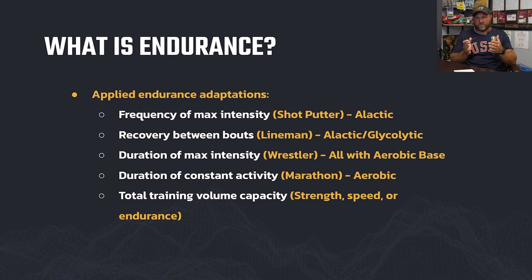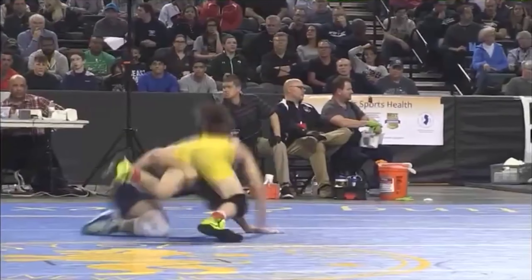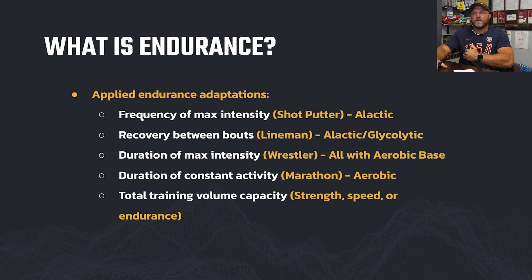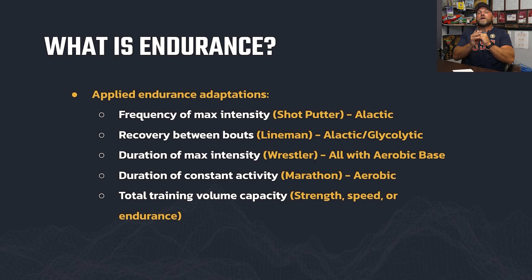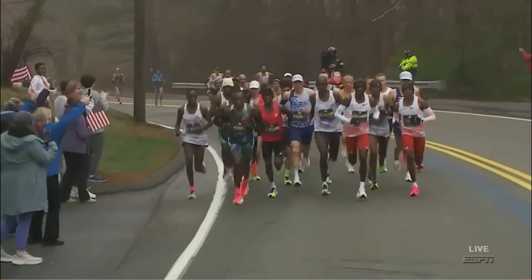We have frequency of max intensity work, recovery between bouts, and then duration of max intensity. Think about a wrestler taking a shot and going through a scramble — it might be a minute to a minute and a half of fighting through a position, tapping into everything. They have to be strong, explosive, but also have a strong aerobic base so they can continue to recover inside the match. Then there's duration of constant activity — like a marathon. Total training volume capacity is how much speed, strength, explosive work, and endurance work the athlete can handle over a long period of time across their training sessions, which is where aerobic and sarcoplasmic capacity really come into play.